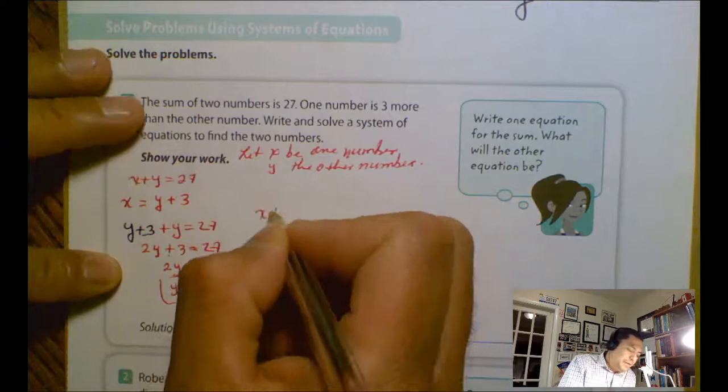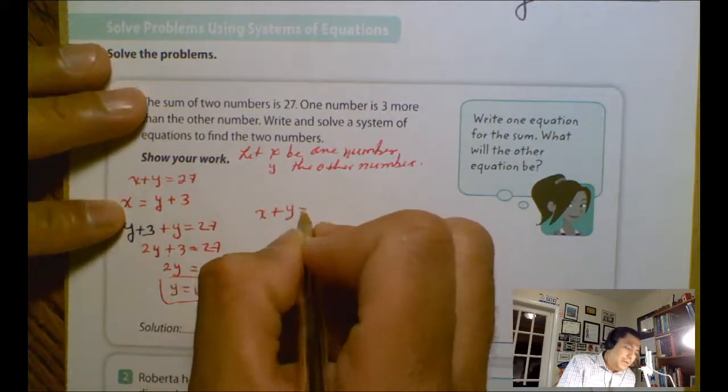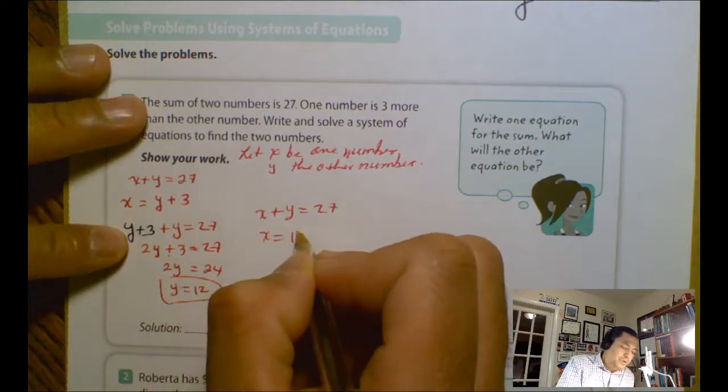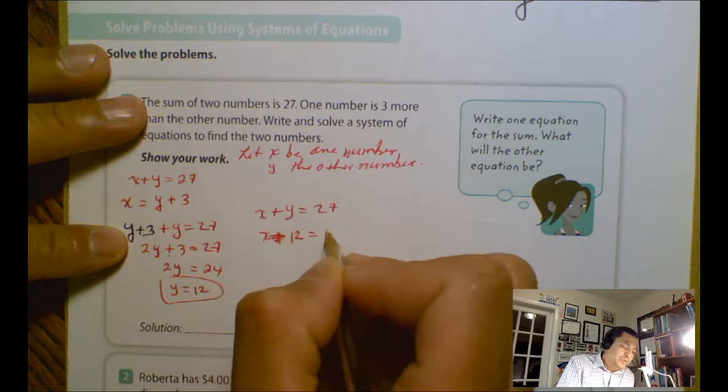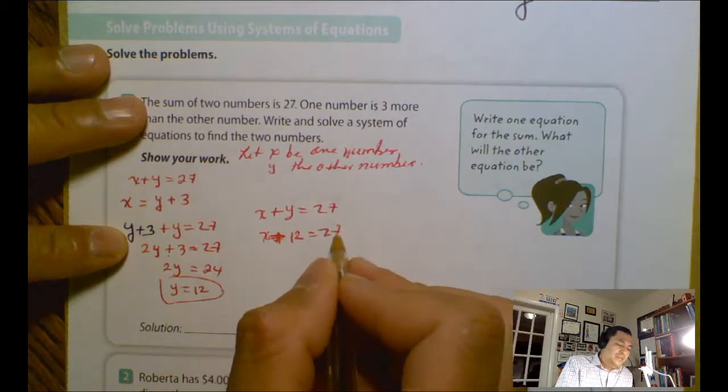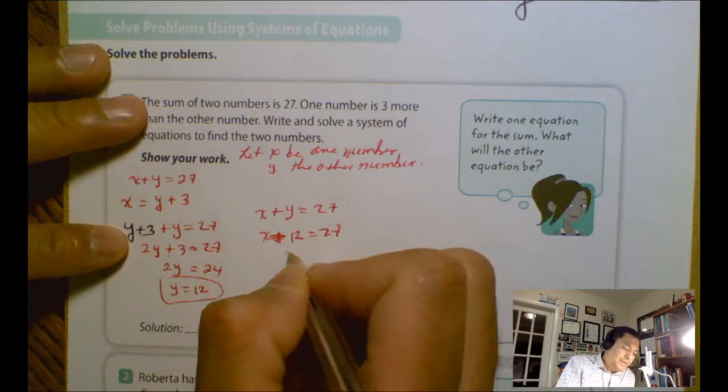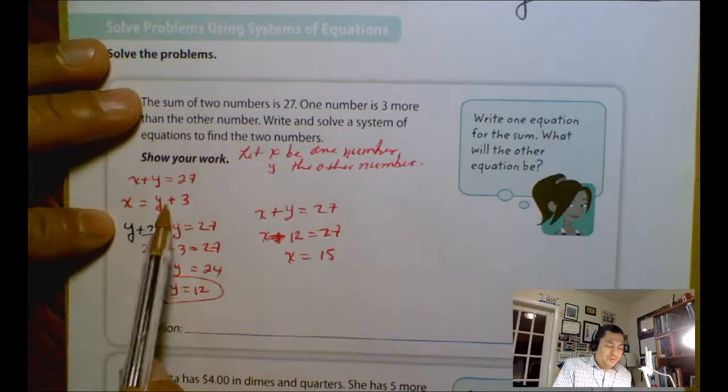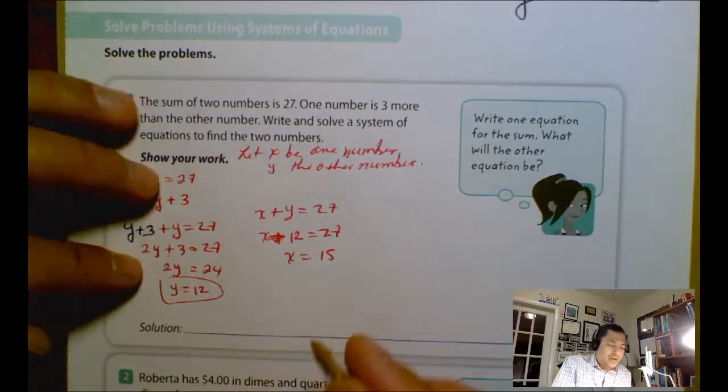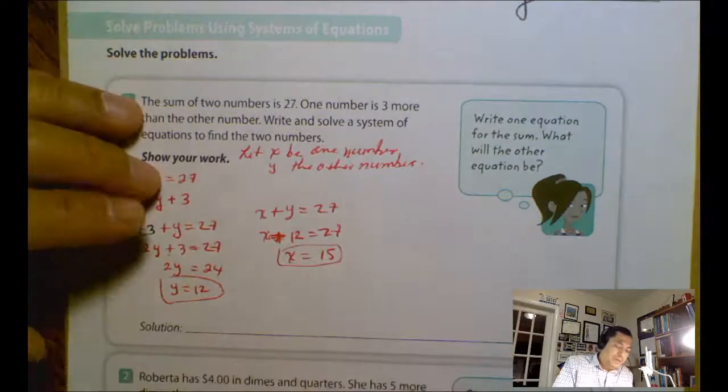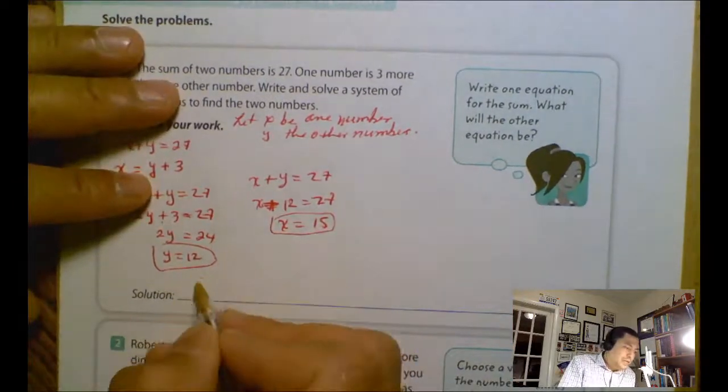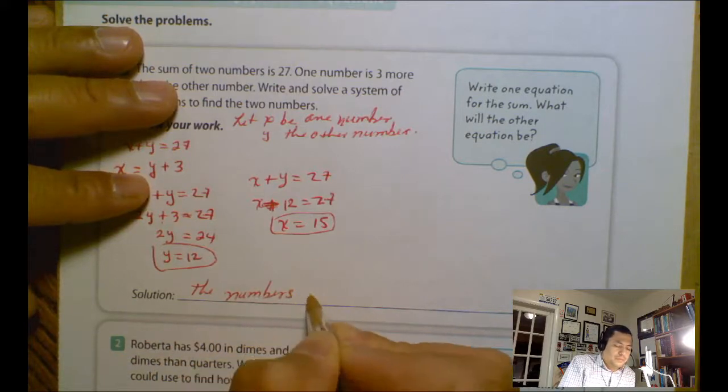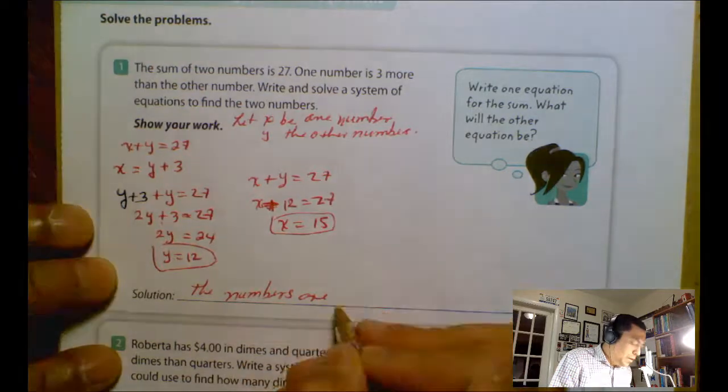The second one: x plus y equals 27. We know that y is 12, so x plus 12 equals 27. Then 27 minus 12 equals 15, so x equals 15. We can know it from here, we can just do 12 plus 3 equals 15. We can get it easier. I was just following the instructions. So the solution: the numbers are 12 and 15.